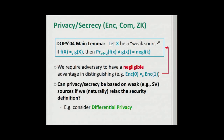So now we ask: can we base privacy on weaker sources if we naturally relax the definition of security? For example, if we consider differential privacy. If you were here for the tutorial, you've seen the definitions also in the previous talk, but let me just go over these again.